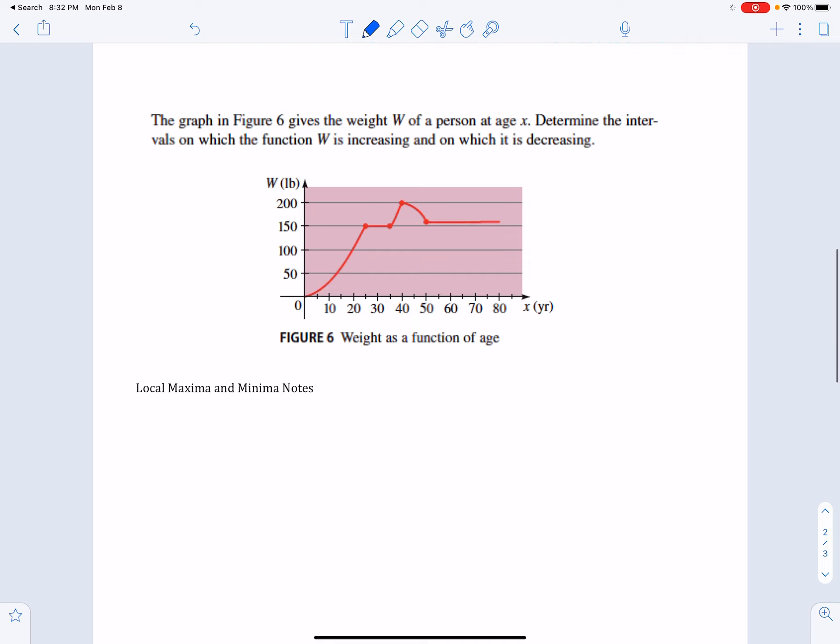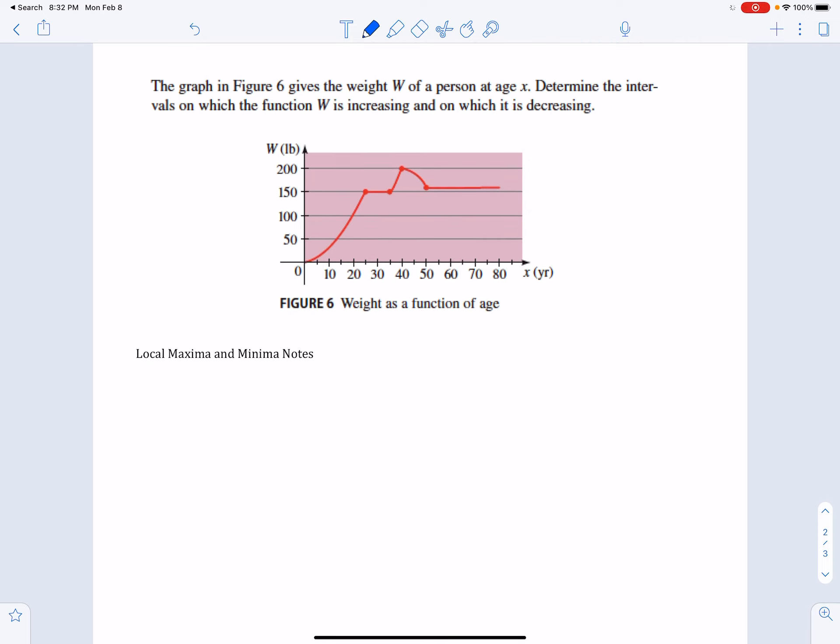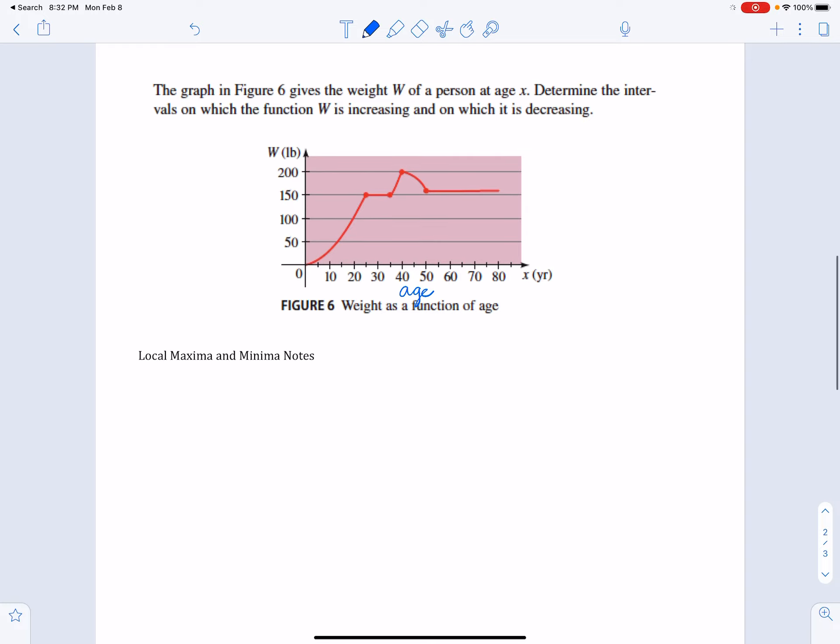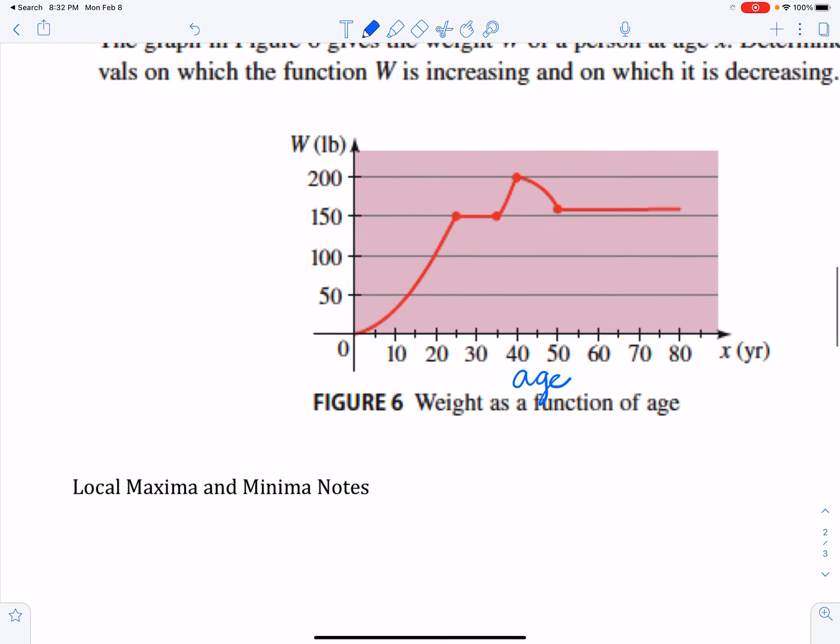All right, so here's our example, last example for the day. Just a quick thing, this local maximum and minimum notes are for tomorrow, or the next time you have notes, so you can leave that blank for now. This is our last example for today. The graph in Figure 6 gives the weight W of a person at age x. Determine the intervals on which the function W is increasing and on which it is decreasing. So down here is their age, and then over here is their weight, W pounds. The solution here is kind of a long statement, so I'm going to go ahead and write it around this whole graph.